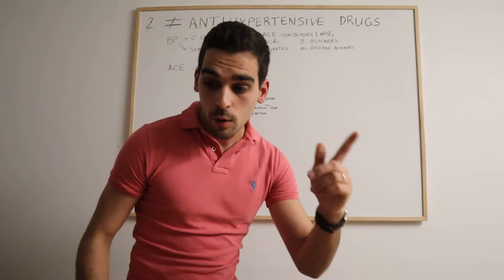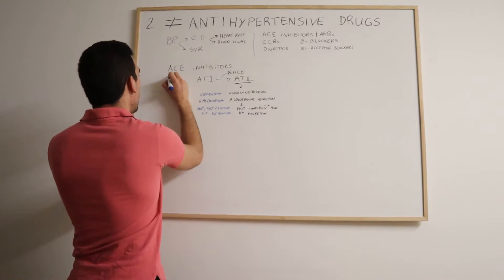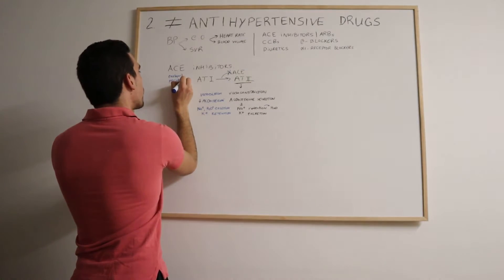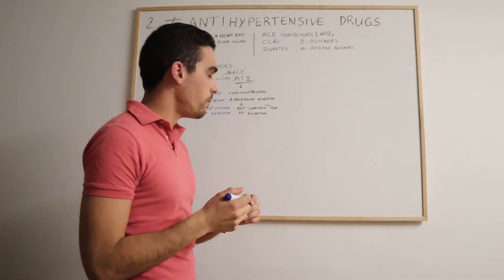Also before going further, ACE inhibitors, some examples are enalapril, perindopril. All the drugs that end in -pril are ACE inhibitors.